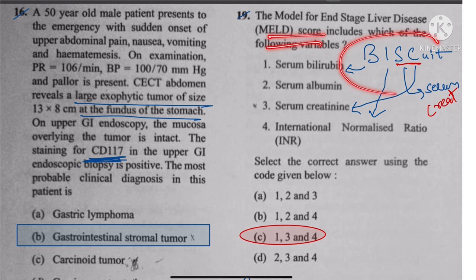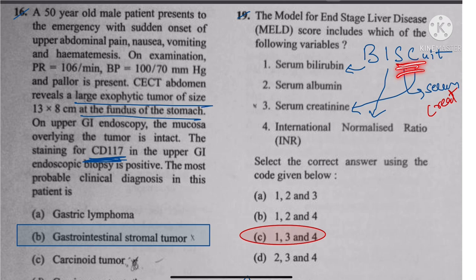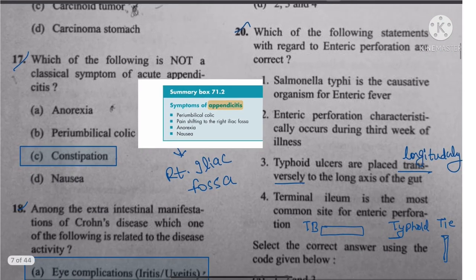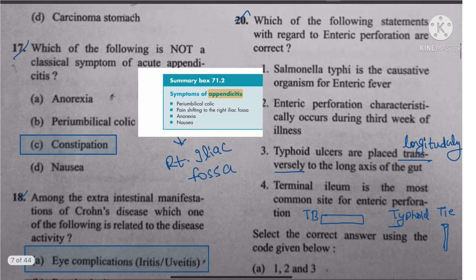Question 19: MELD score. The trick is 'BISCUIT' — B for serum bilirubin, I for INR, SC for serum creatinine. The answer is 1, 3, and 4.